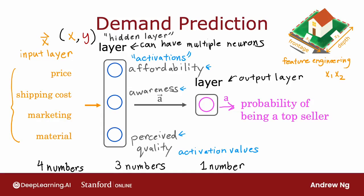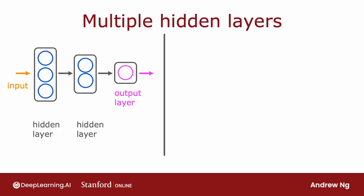You've seen here one example of a neural network with a single hidden layer. Let's take a look at some other examples of neural networks, specifically with more than one hidden layer. Here's an example: a neural network has an input feature vector x fed to a first hidden layer. If this hidden layer has three neurons, it outputs a vector of three activation values. These three numbers are then input to a second hidden layer, and if this second hidden layer has two neurons, it outputs another vector of two activation values that goes to the output layer, which then outputs the neural network's final prediction.